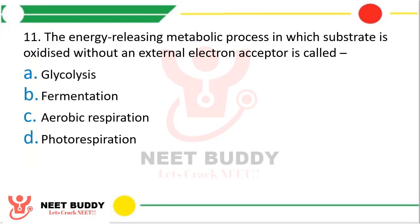Question 11: The energy-releasing metabolic process in which the substrate is oxidized without an external electron acceptor is called — glycolysis, fermentation, aerobic respiration, or photorespiration? The correct answer is option B, fermentation.